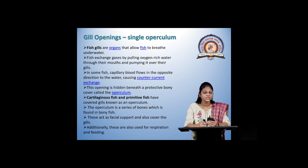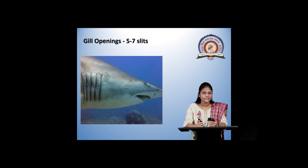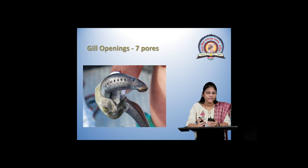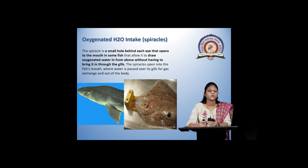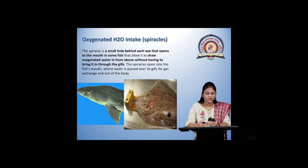It is seen in cartilaginous fishes and also in primitive fishes. There are gill openings seen externally, with numbers ranging from 5 to 7 slits. In the figure we can see longitudinal line-like gill openings, known as gill slits. In some fishes it shows pores — there are 7 pores present in some fishes. Next, another breathing organ is the spiracle. In some fishes, an extra organ used for intake of oxygenated water is seen as a spiracle. Spiracles are small holes present near the eye, and they draw oxygenated water without drawing it through the gills.